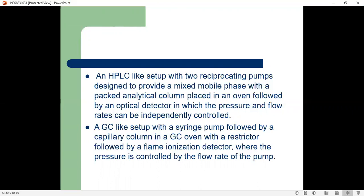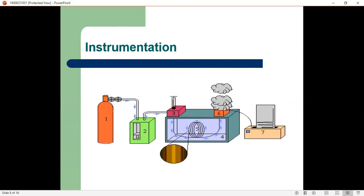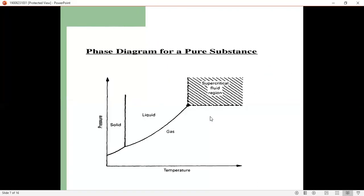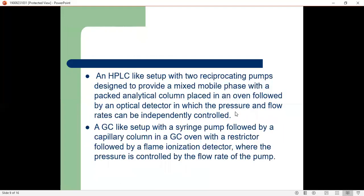A GC-like setup with syringe pump followed by a capillary column within a GC oven with a restrictor followed by a flame ionization detector, where the pump is controlled by the flow rate.